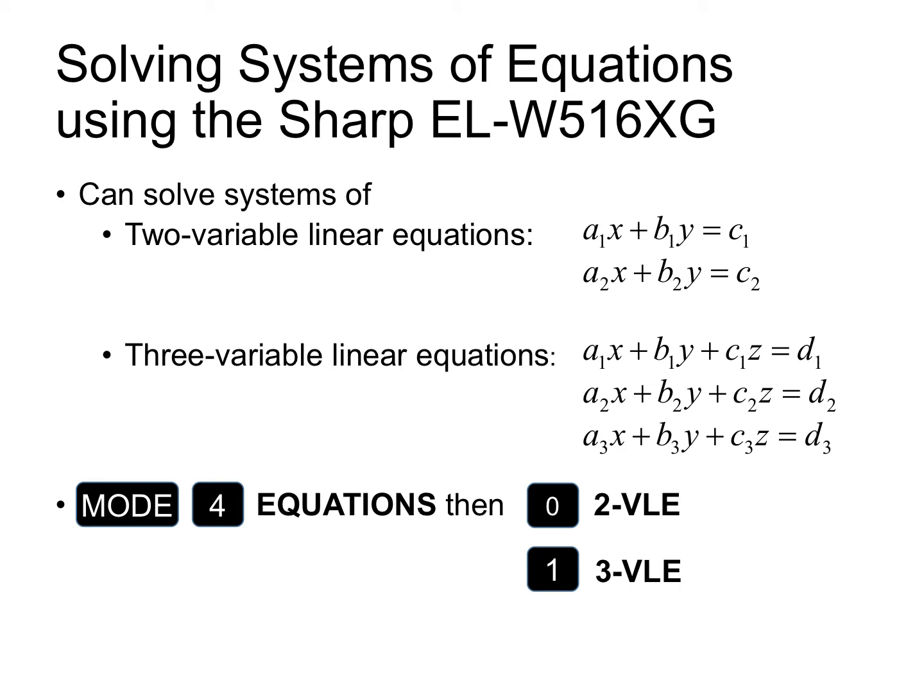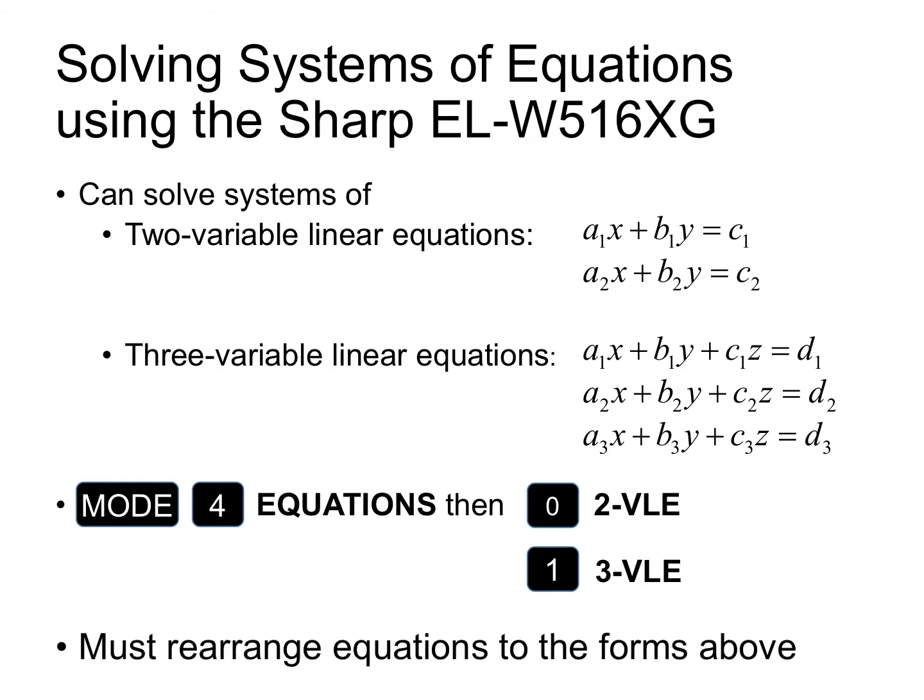To solve these equations, hit MODE on your calculator, then 4 for equations. For a two-variable linear equation, hit 0. For a three-variable linear equation, hit 1. It's important that when entering information for these systems, the equations are in the form AX plus BY equals C for two-variable, and AX plus BY plus CZ equals D for three-variable linear equations.